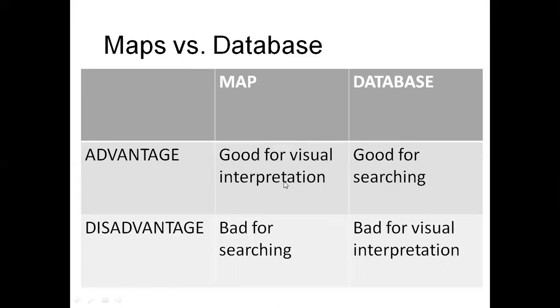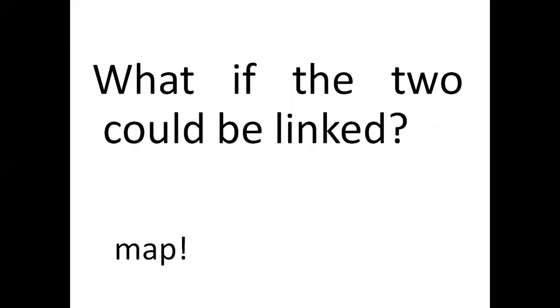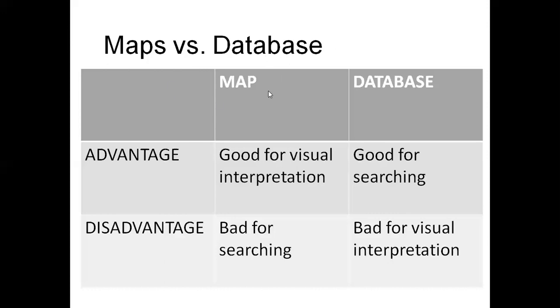Now we have two ways to present maps and database. One person thought that I will connect the database and maps together and create a software in which we have at the same time database and their physical features through maps to study them. That person, Roger Tomlinson, created a software in the 1960s. That software's name is GIS.